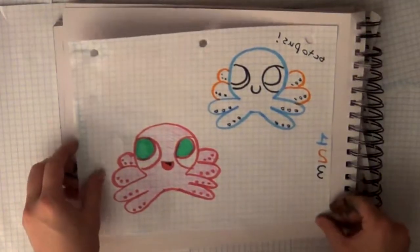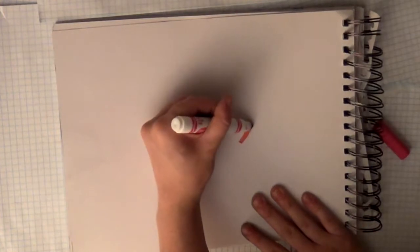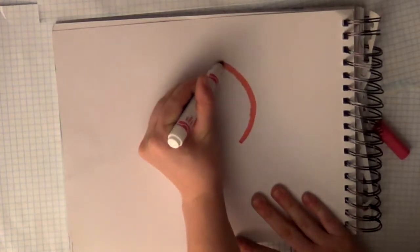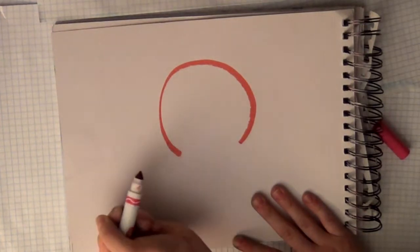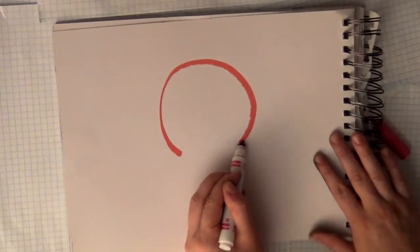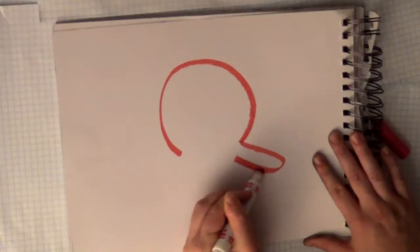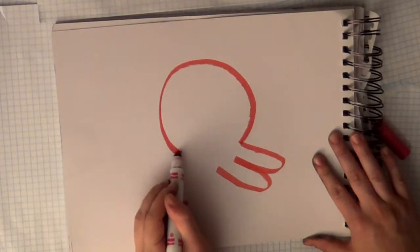How to draw an octopus. Step number one: you're going to draw most of a circle pointed downwards. For the next step, you're going to give him four little legs. They're just oval shapes, and you put two on one side and two on the other.